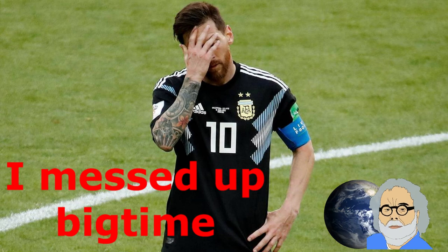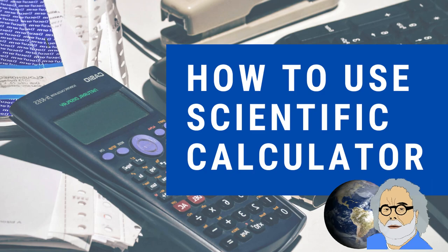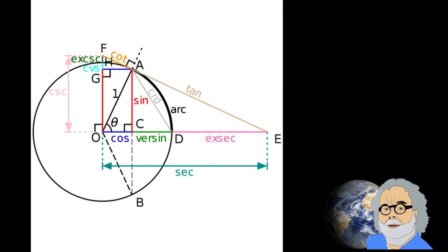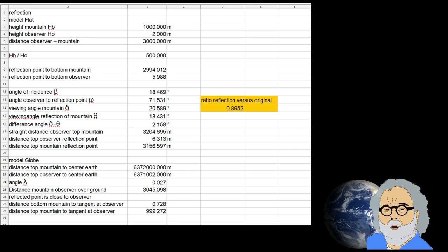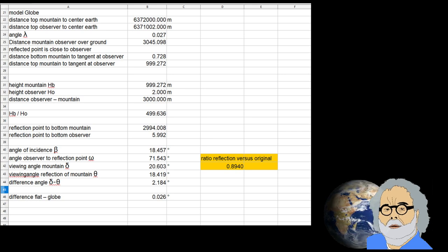When I do my calculations properly as good as I can, the calculations on the globe model are rather complicated, I find that the viewing angle of the reflection on a flat mirror is 0.8952 times that of the mirrored object itself and on a curved mirror with a radius of 6371 kilometers the viewing angle of the reflection is 0.8940 times that of the mirrored object itself.